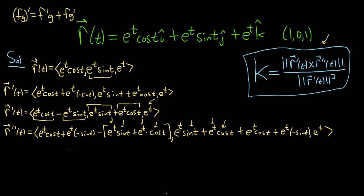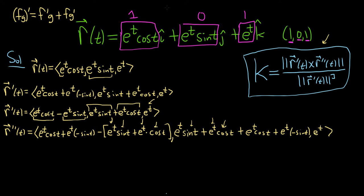Now we have to figure out the value of t. The first component needs to equal 1, the second component needs to equal 0, and the third component needs to equal 1. So t must equal 0 — that's the only way this works. E to the 0 is 1, sine of 0 is 0, cosine of 0 is 1.